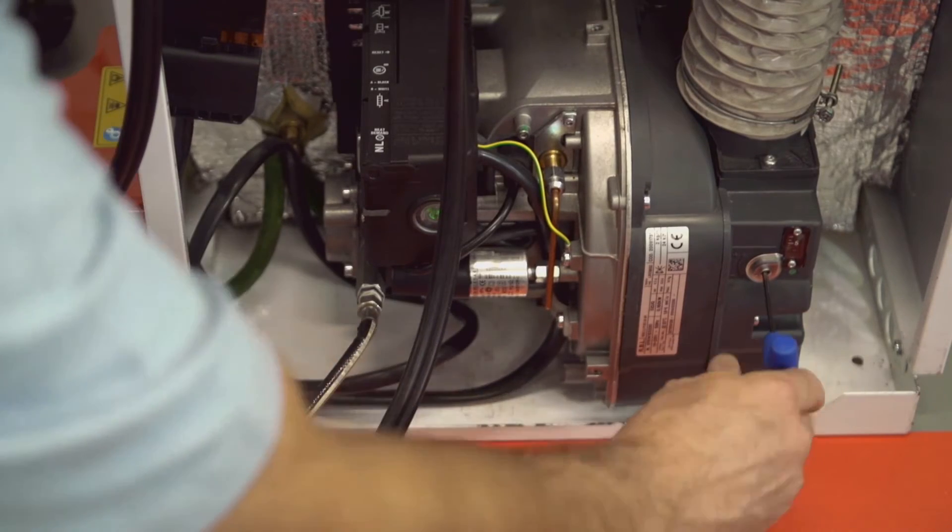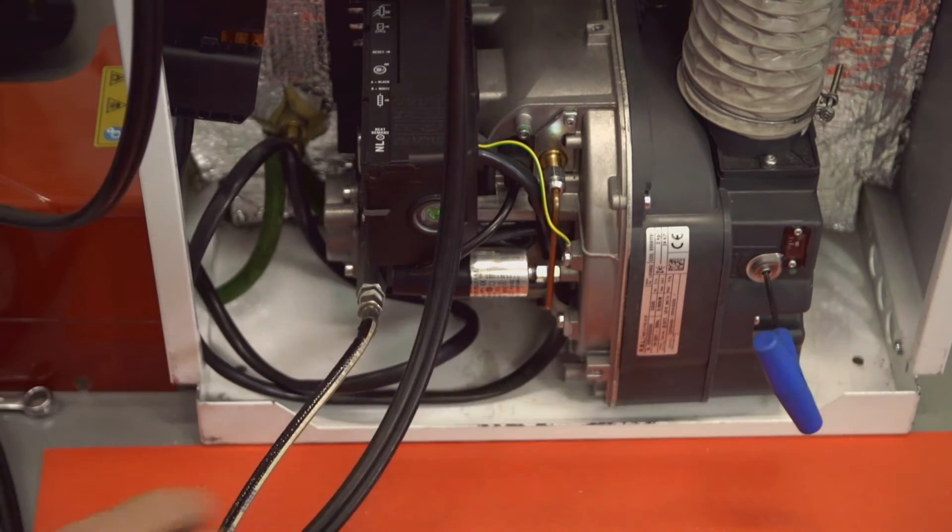Remember, to increase the CO2 reading, close down the air shutter by turning it anticlockwise. Or to reduce the CO2 reading, open up the air shutter by turning it clockwise.